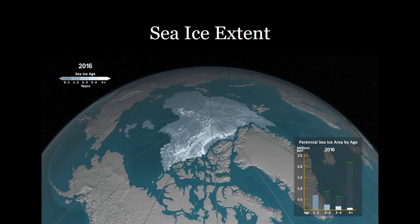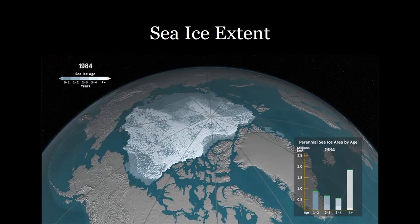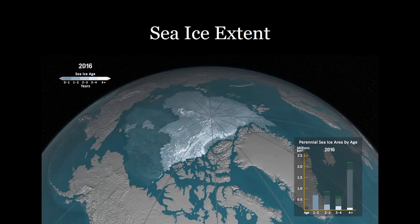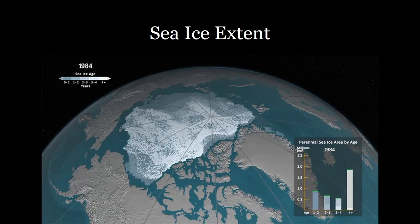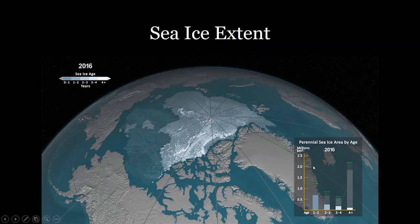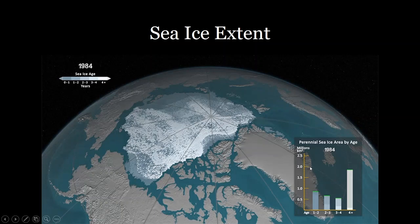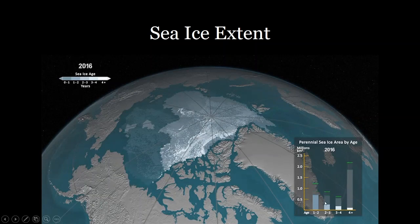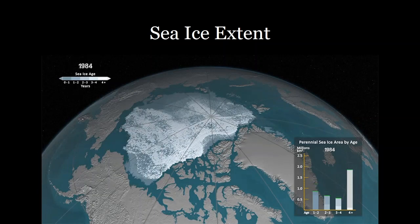You can see that the extent of sea ice has been drastically decreasing. Comparing 1984 to 2016, a significant amount of ice has been lost. Where you used to have over 2 million square kilometers of very old, well-developed sea ice, nearly all of that multi-year ice has melted, and the majority of what's left is only one or two years old — making it much more vulnerable to future melting.